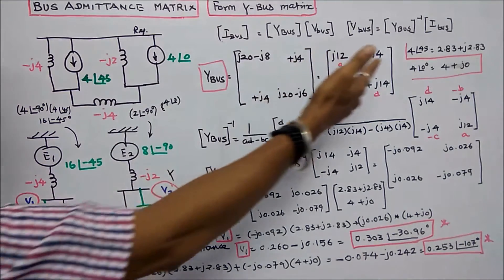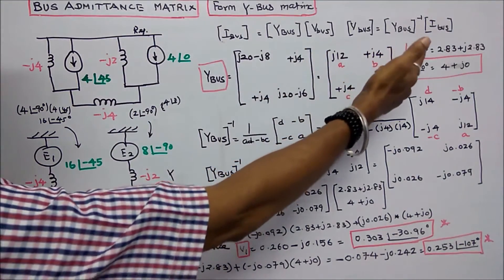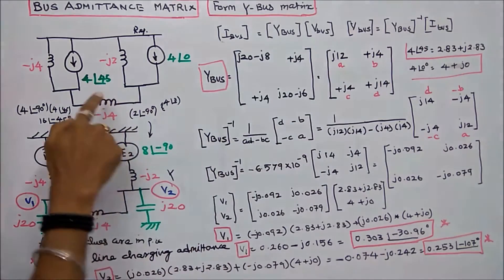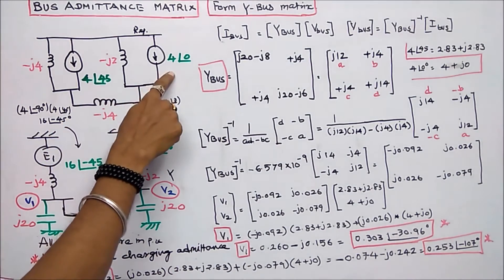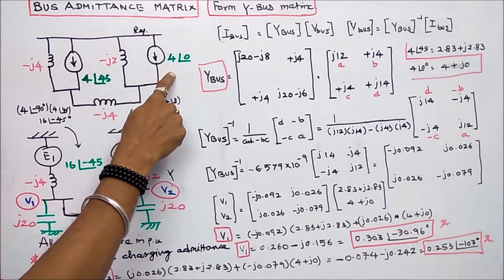In rectangular form, the sources are 2.83 plus J2.83 and 4 plus J0.